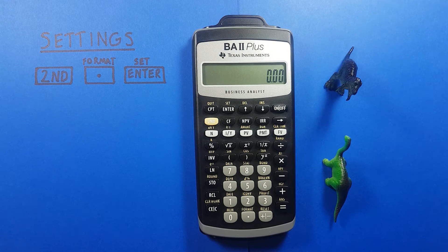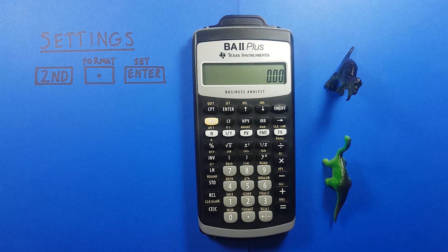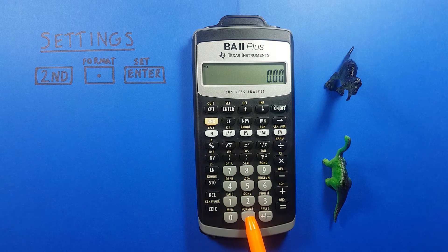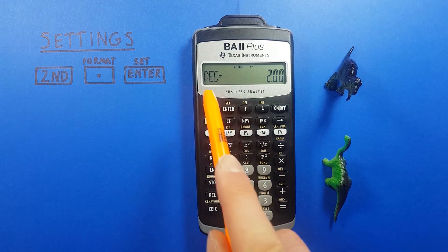So to do this we first go into the format menu by pressing second and then the decimal key here and that'll bring this up.